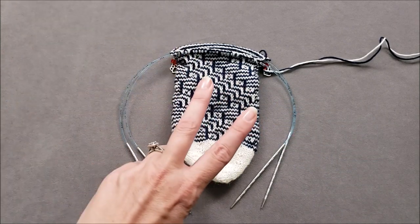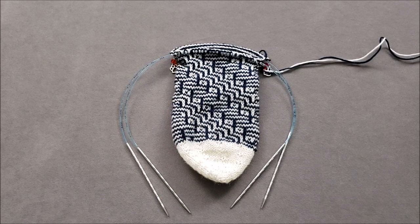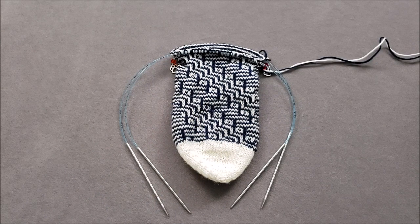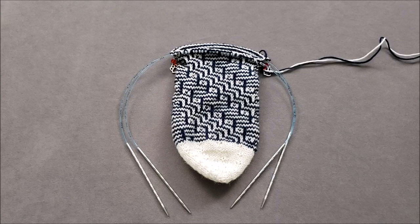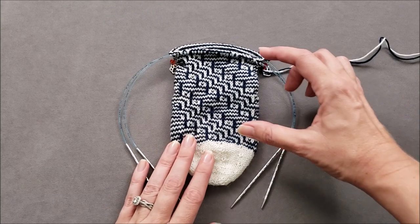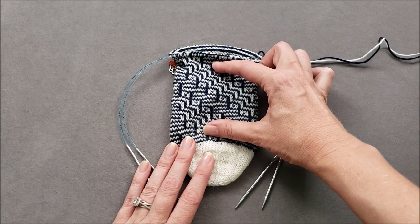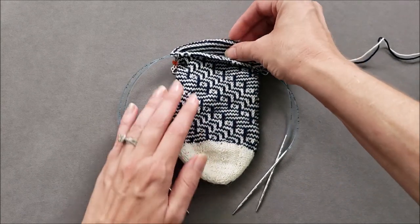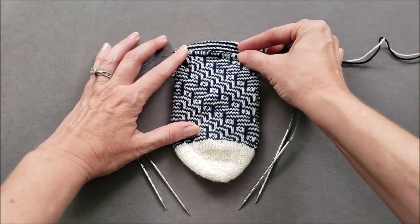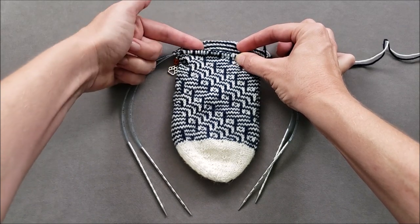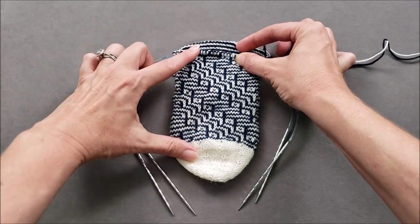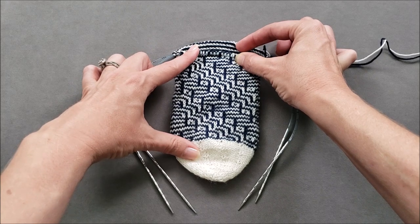Tip number two: Blocking matters. Mosaic knitting can look bumpy and uneven as you work. The fabric will also likely be shorter than you are expecting. You can see here on the foot of my sock that right now the sole of the sock is about a half an inch longer than the instep of the sock.